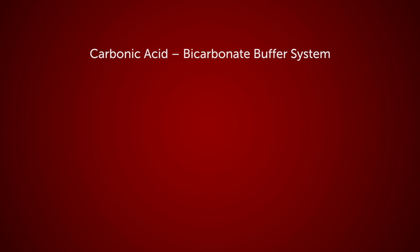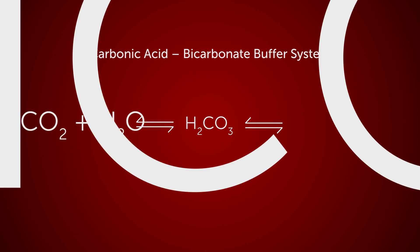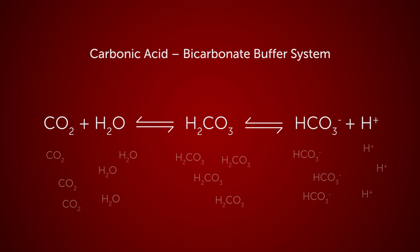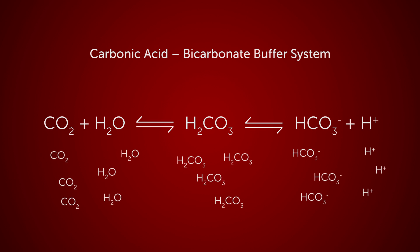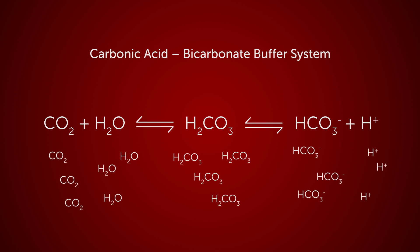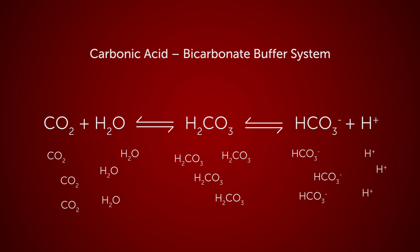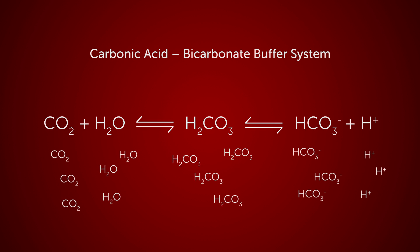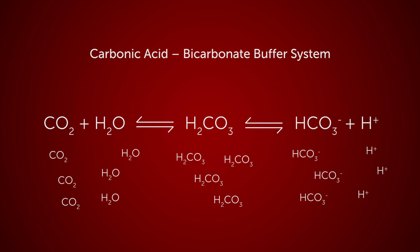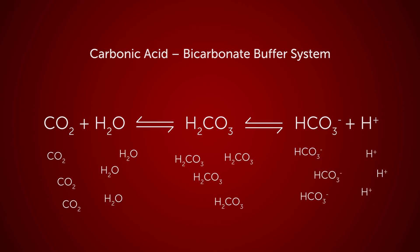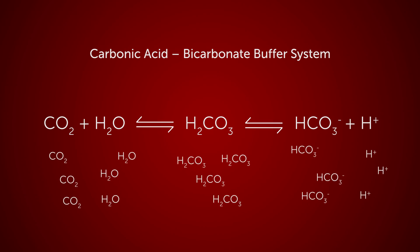Now we will explore an important buffering system: the carbonic acid bicarbonate buffering system, or the bicarbonate system for short. This system is responsible for buffering the pH of your blood every day. Blood pH must be kept as close to 7.4 as possible in order to maintain homeostasis. This equation governs the buffering reactions of bicarbonate.